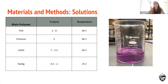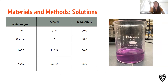These are the polymer solutions we created and tested along with our weight percents and the temperatures each solution was heated to for full incorporation. For PVA, we tested 2, 4, and 8 weight percent and heated the solution to 90 degrees Celsius. For chitosan, we created a 2 weight percent solution heated to 80 degrees Celsius. For low acyl gellan gum, we created a 1 to 2.5 weight percent solution heated to 60 degrees Celsius. For sodium alginate, we made a 0.5 to 2 weight percent solution at 25 degrees Celsius. We made and tested these as individual solutions, but also mixed the solutions together for further analysis and testing.